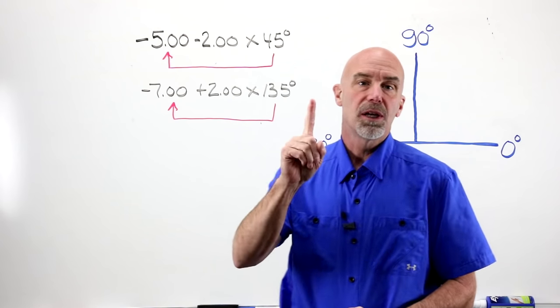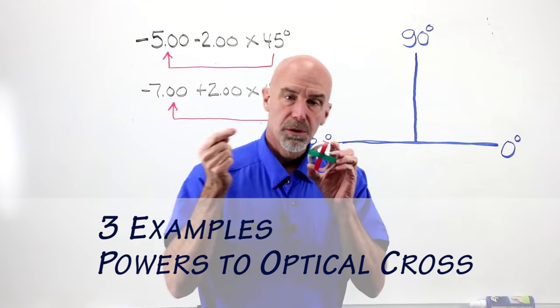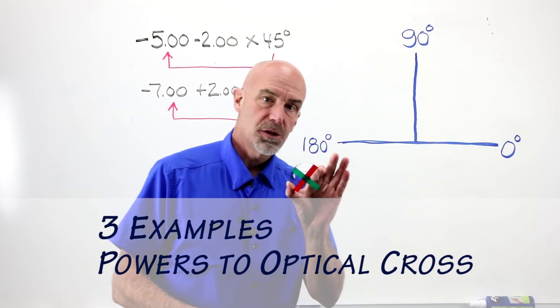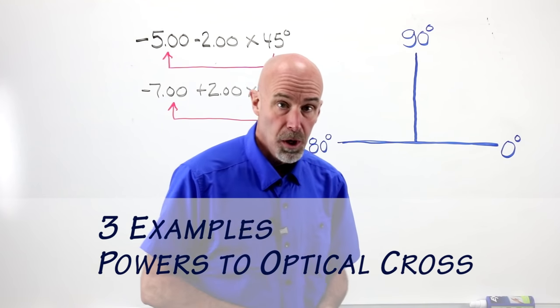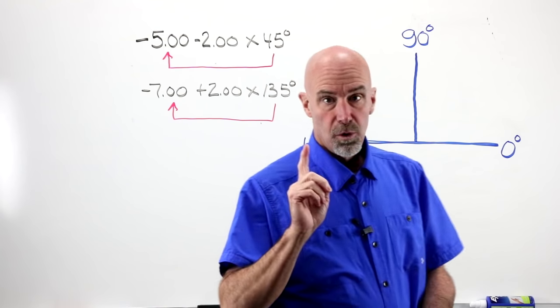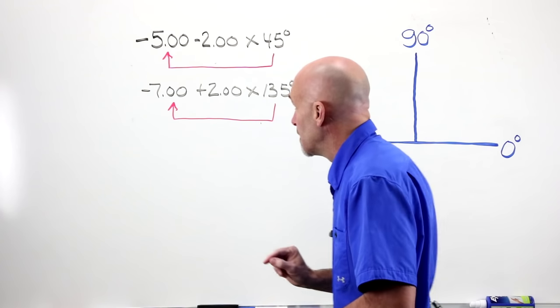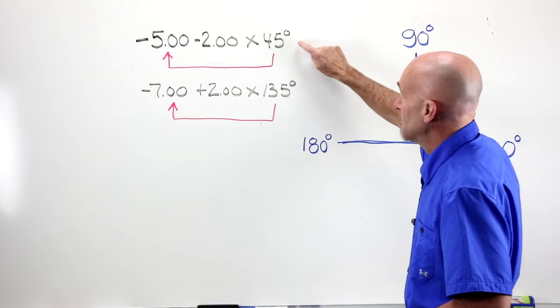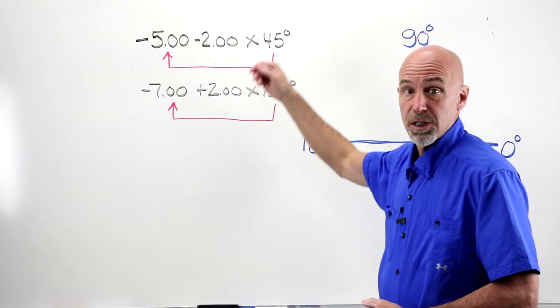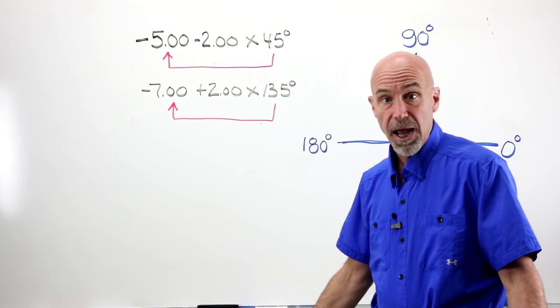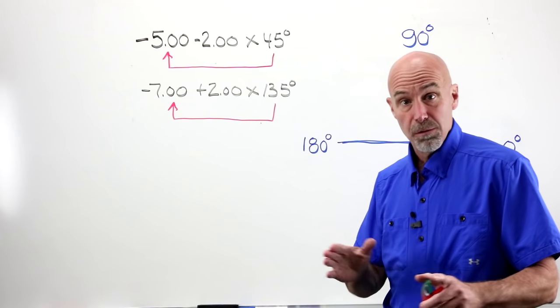All right, here we are, example number one, and we are going to use that same lens that we just were working with a few moments ago over on the bench. Let's take a really quick moment and sidestep. I said that we were going to assign a random or arbitrary axis, and it didn't matter on the bench. Well, now it matters.